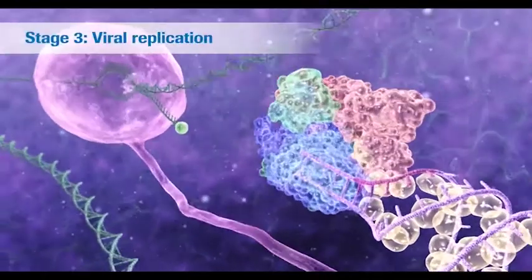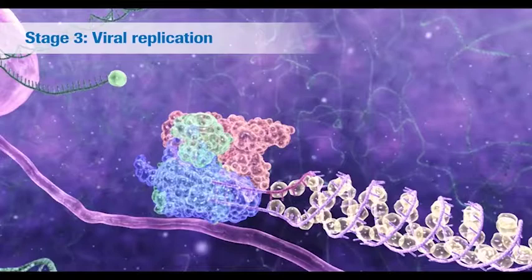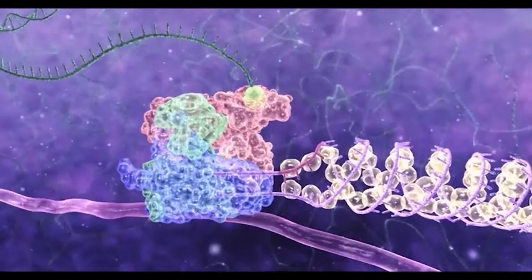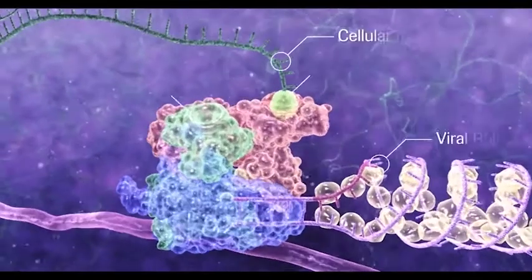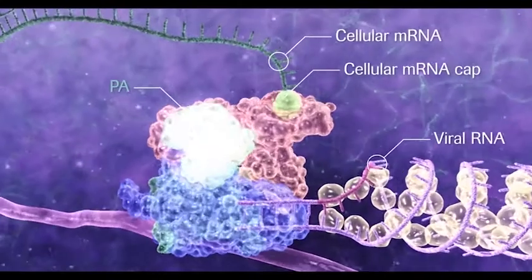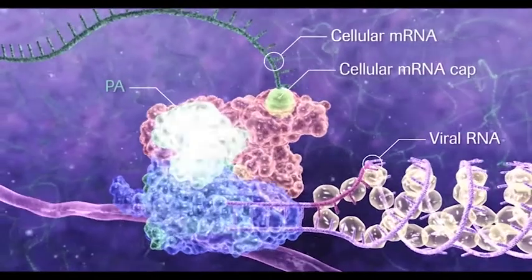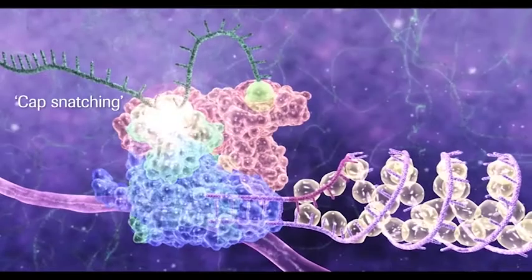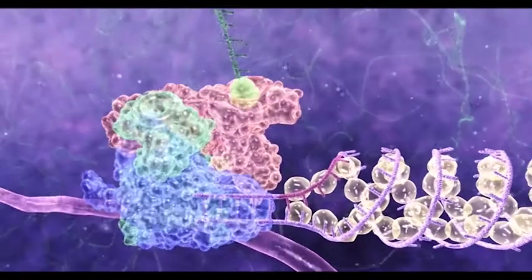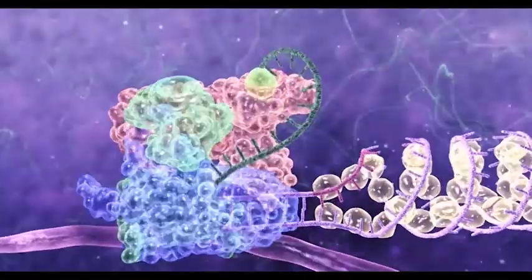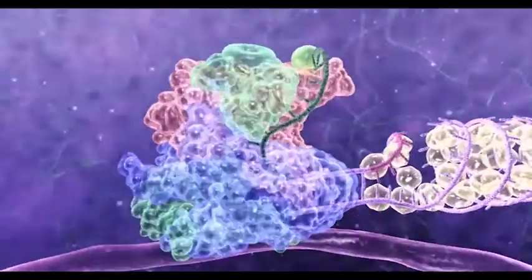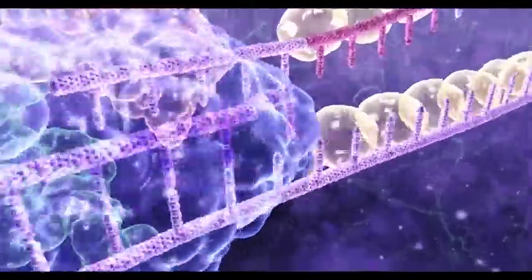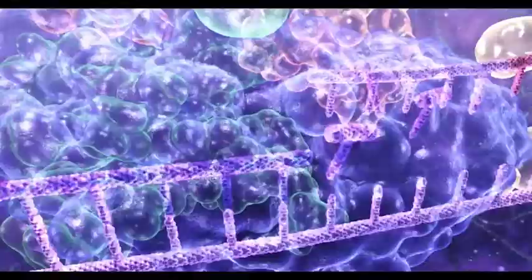However, the influenza virus doesn't have all it needs to replicate its own genomic material. It requires one small piece of the host cell messenger RNA, called a cap, to trigger viral transcription. It steals this cap in a process called cap snatching. The thief is the PA subunit that possesses cap-dependent endonuclease activity. Once the host cap has been stolen, transcription of viral messenger RNA can be initiated.